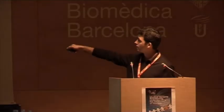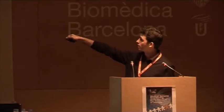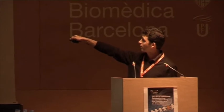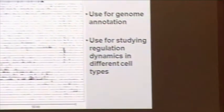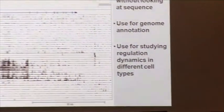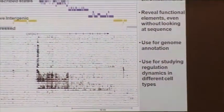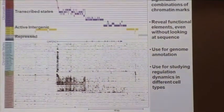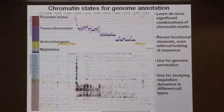What we have done is learn a set of chromatin states, which are defined by combinations of these marks. And we can now start reasoning about promoter states, transcribed states, active intergenic states, repressed and repetitive states, across the genome.